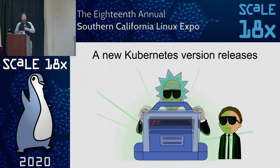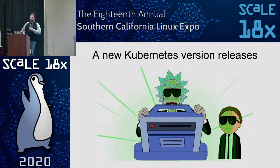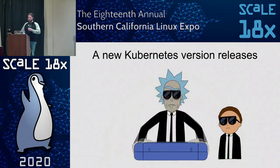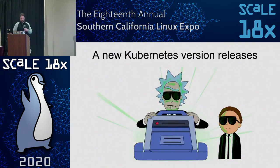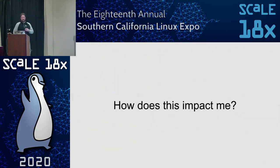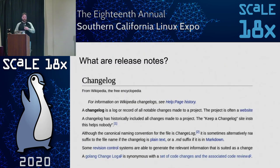First, something to consider: imagine there's a new Kubernetes release — shiny, new, and cool. What new alpha features are there that I could turn on for my cluster? But then reality sets in. If I upgrade to this version, what is going to happen? Are there breaking API changes? Has a feature I've built our entire application on become deprecated? And that's where release notes come in.